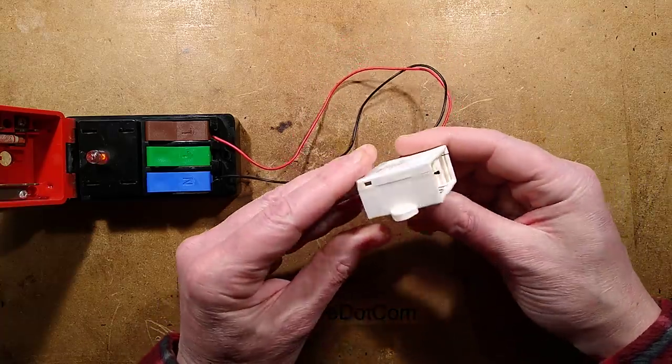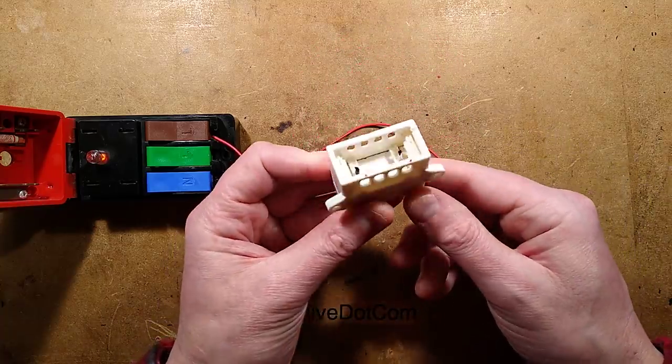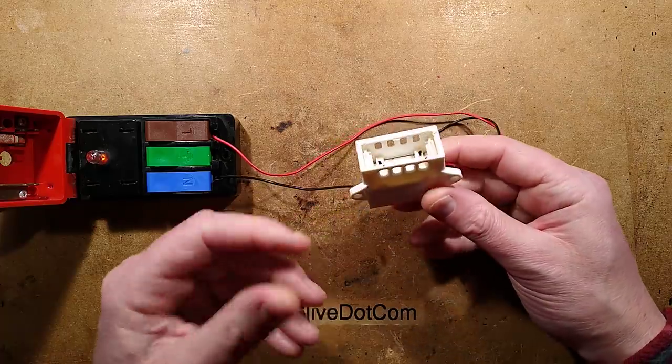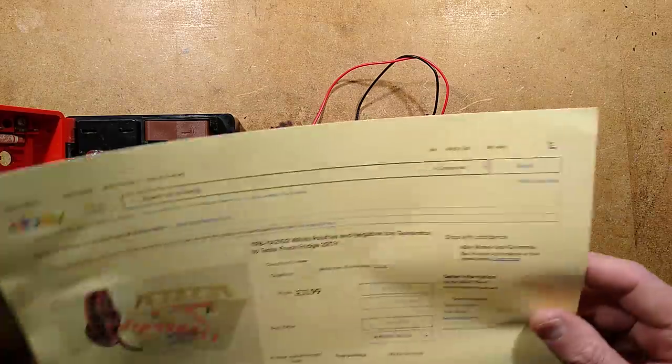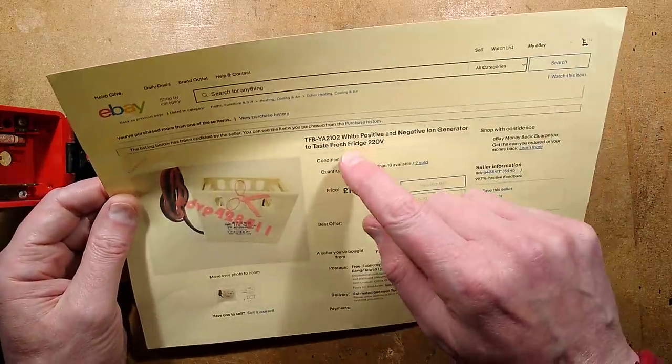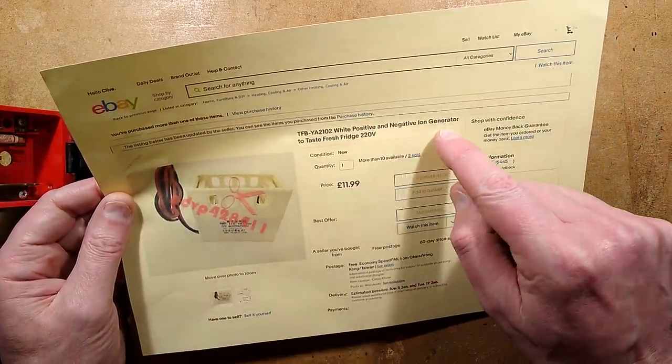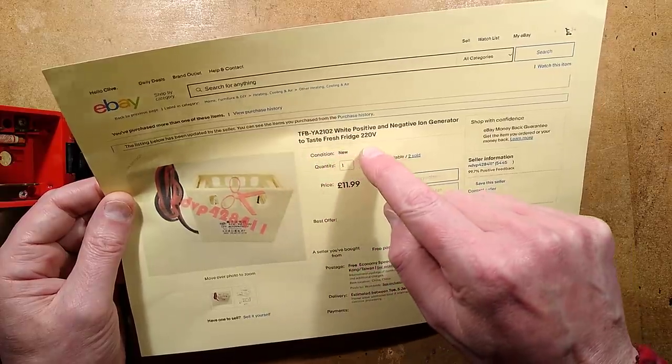An unusual and quite topical module from China. This one is designed for use inside refrigerators for removing odors. The listing on eBay described it as white positive and negative ion generator to taste fresh fridge to 20 volt.